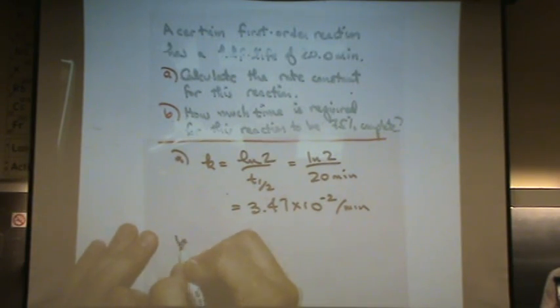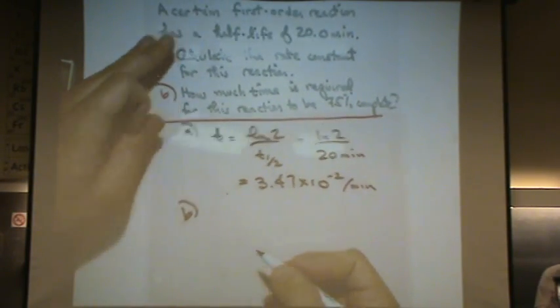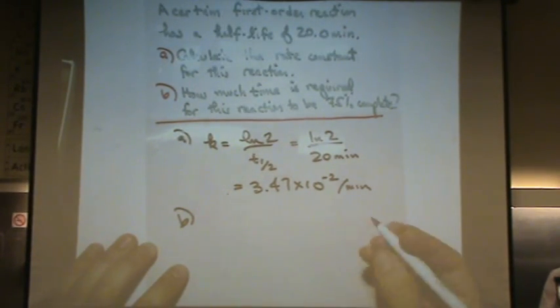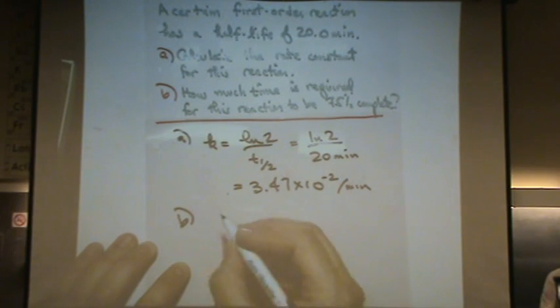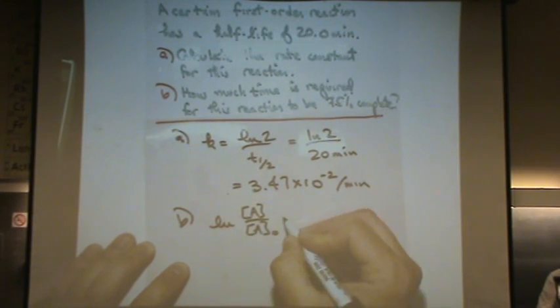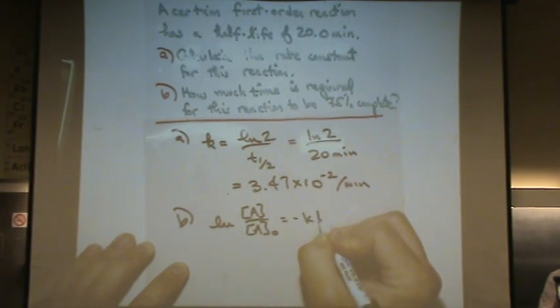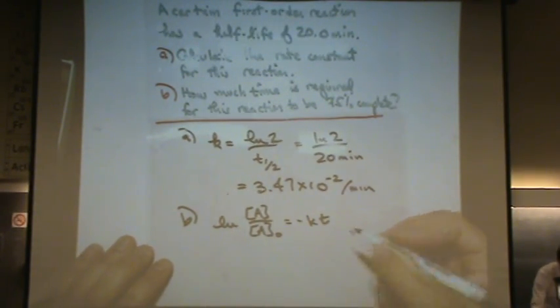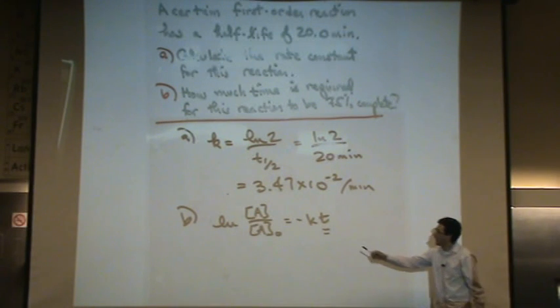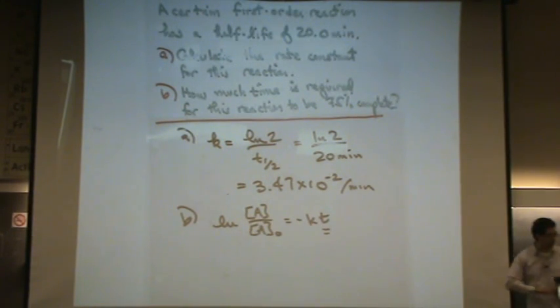And there's A. B, how much time is required for this reaction to be 75% complete? Well, let's first write the formula, the integrated rate law, and there's multiple forms that exist. This one's going to be the most helpful because we're going to be solving for time. So I want time free for me to solve for it. I've got K. The hard thing is, what's A over A naught?